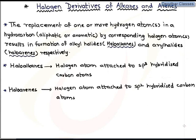Hello students. In this first topic from the second year program, we are going to learn about halogen derivatives of alkanes and arenes — that is, halogen derivatives of saturated hydrocarbons and halogen derivatives of aromatic compounds or aromatic hydrocarbons.